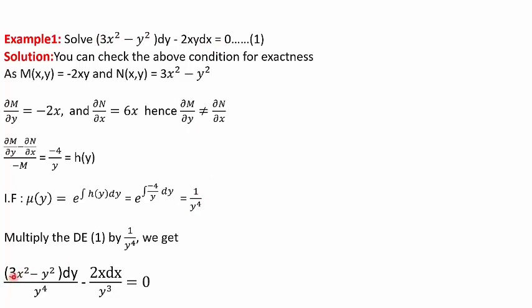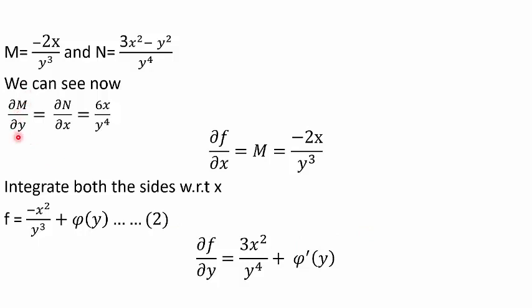After multiplying, the differential equation becomes (3x² - y²)/y⁴ dy - 2x/y³ dx = 0. The new M is -2x/y³ and new N is (3x² - y²)/y⁴. Finding del M by del y and del N by del x, both come out to be 6x/y⁴. The differential equation is now exact after multiplying by the integrating factor, so we proceed to solving it.